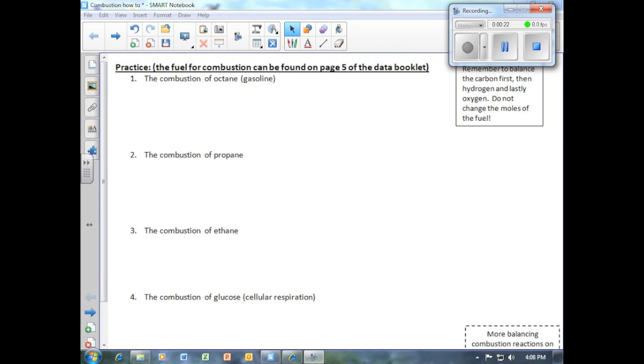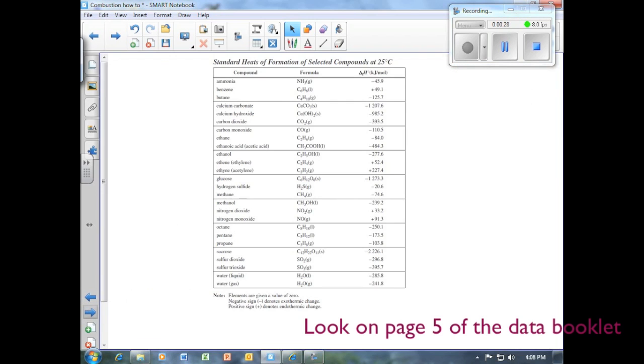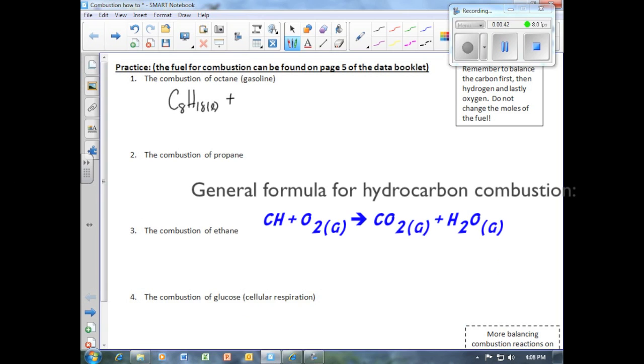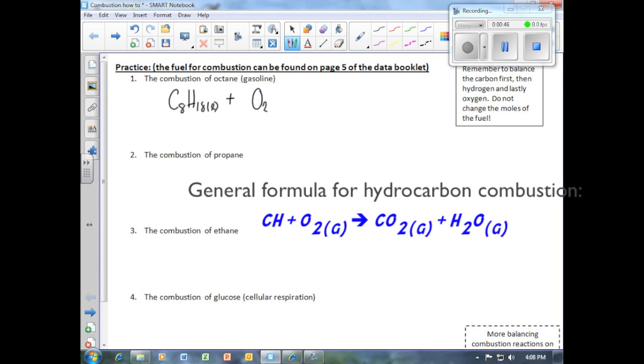In the first question where it asks to write the equation for the combustion of octane, we first go to page 5 to look up the chemical formula for octane. Octane is C8H18 liquid. In any combustion reaction, besides a fuel, the second reactant is always oxygen gas.